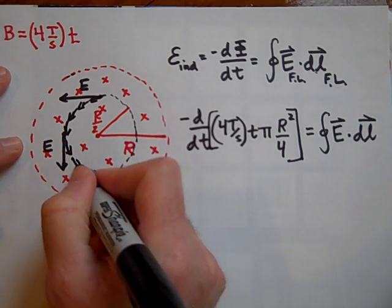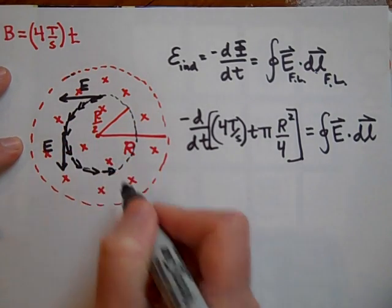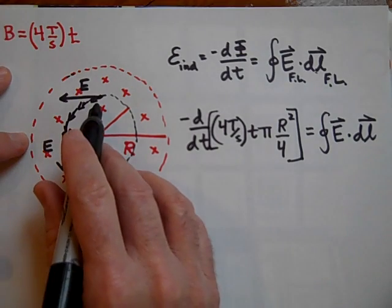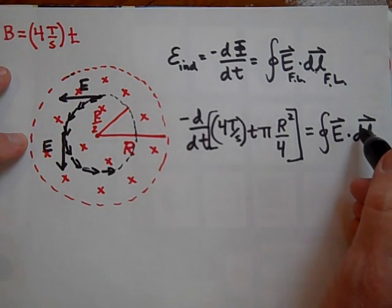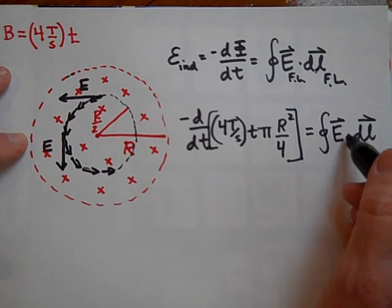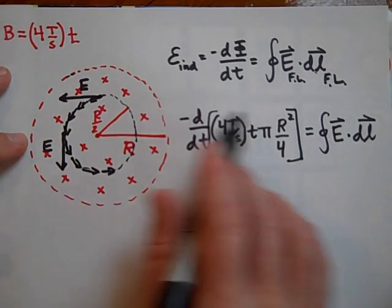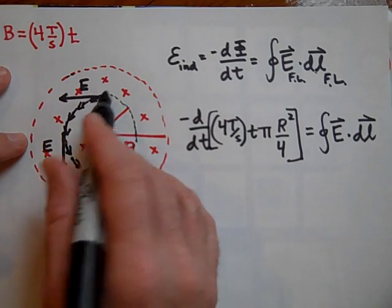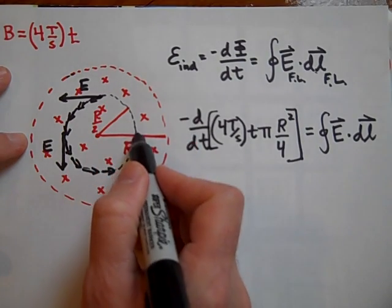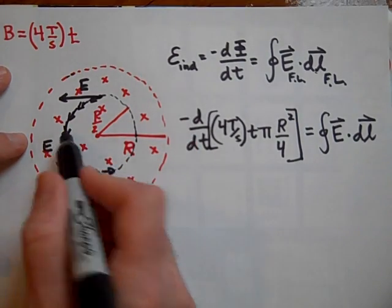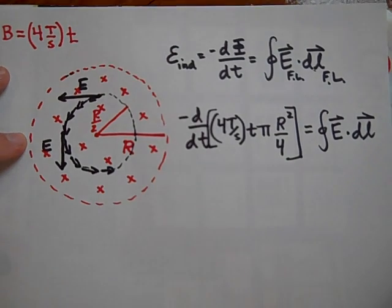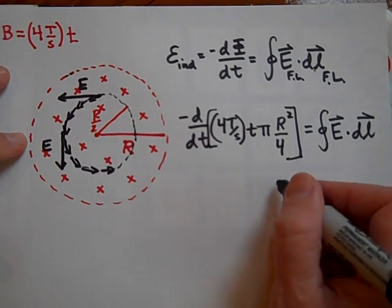Here's a dL, here's a dL, here's a dL, there's a dL. These dL's make up the Faraday loop. Notice that at every point along the way, E and dL are parallel to each other, so we can get rid of the dot product.